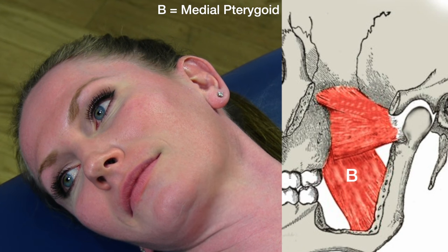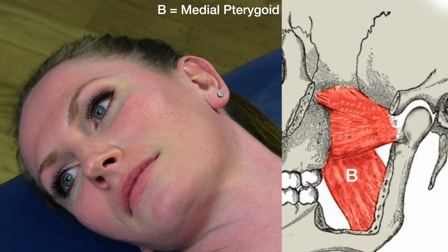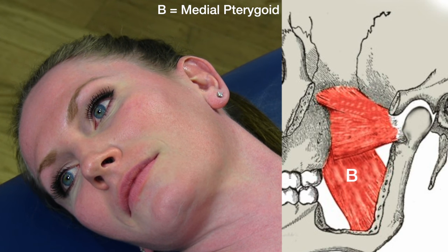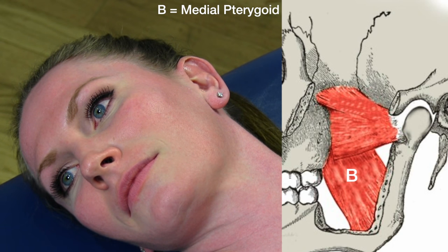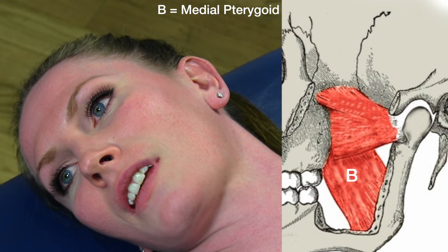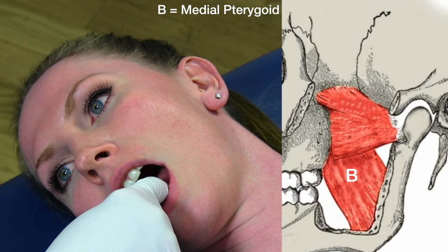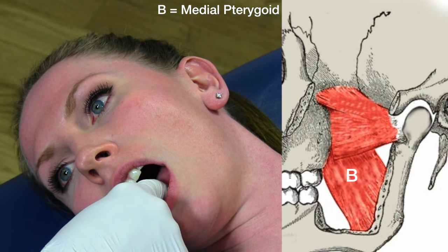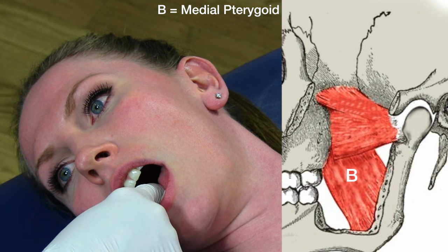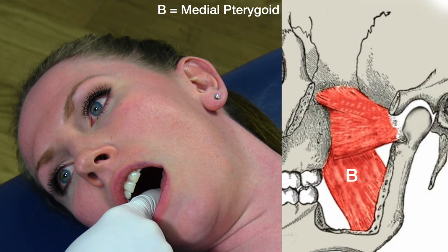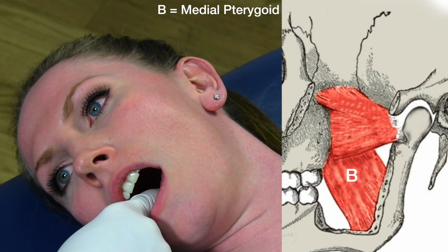Let's go over palpation of the medial pterygoid. Again, you're going to use a glove or a finger cot. What you're going to do is basically follow the lower teeth this time. Mickey, open your mouth — I'm going to follow the inside of the lower teeth, go right past there, and then go a little bit posterior and lateral.